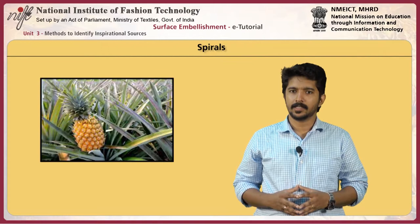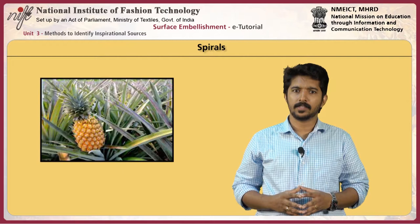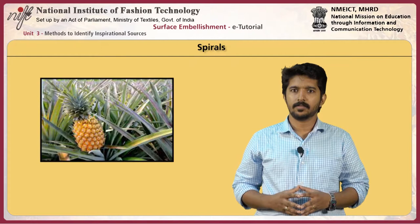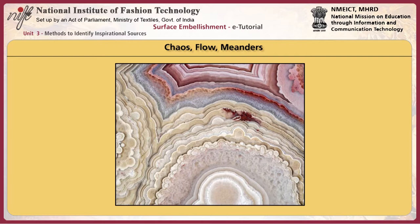Spiral patterns are found in the body plans of animals including molluscs such as the nautilus, and in the phyllotaxis of many plants — both in the leaves spiraling around stems and in the multiple spirals found in flower heads such as sunflowers and fruit structures such as pineapples. Chaos theory predicts that while the laws of physics are deterministic, events and patterns in nature never exactly repeat because extremely small differences in starting conditions can lead to widely different outcomes. Many natural patterns are shaped by this apparent randomness, including vortex streets and other effects of turbulent flow such as meanders in rivers.